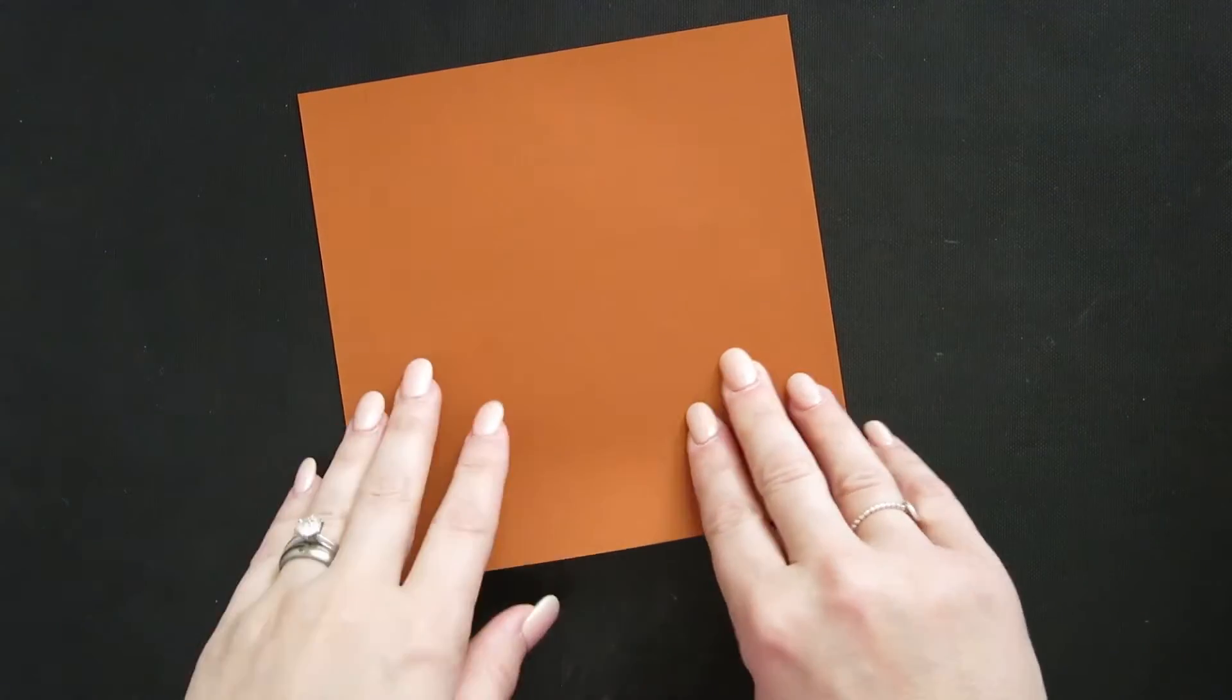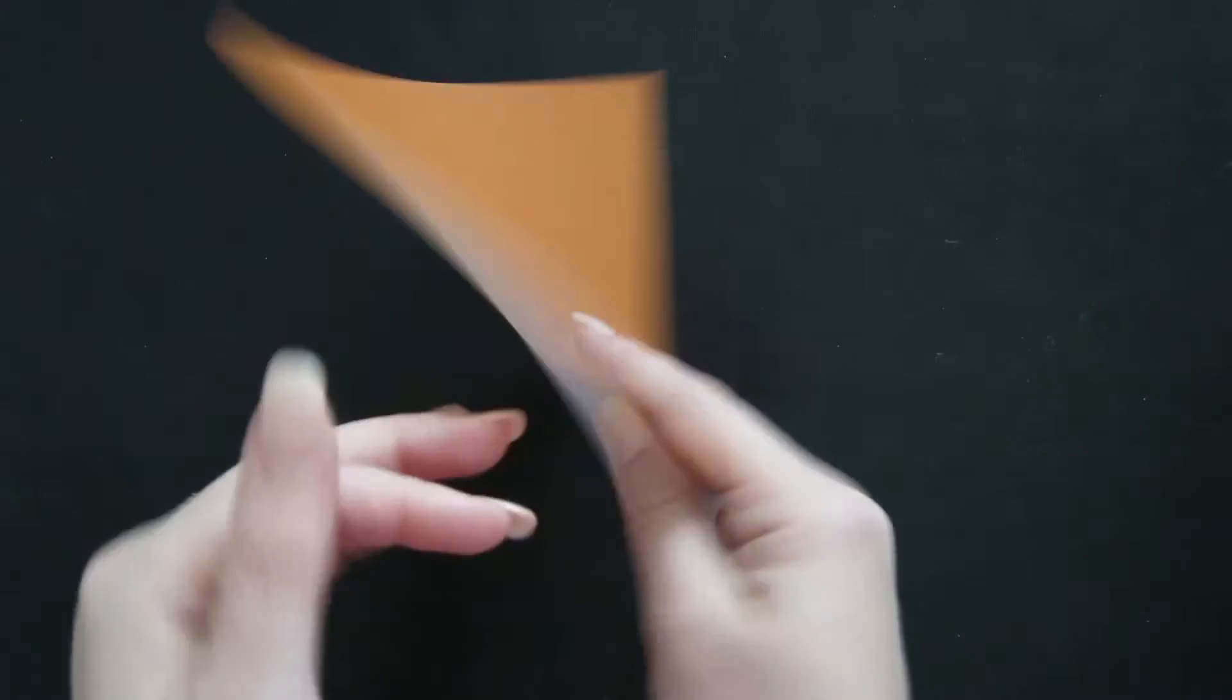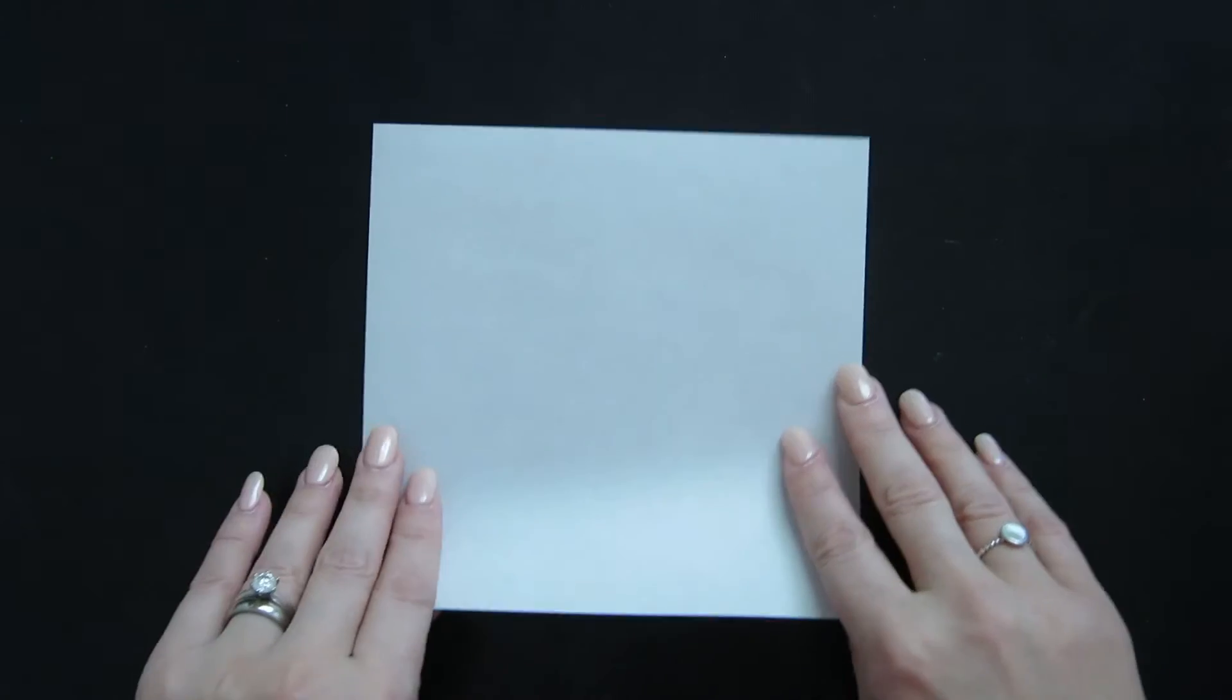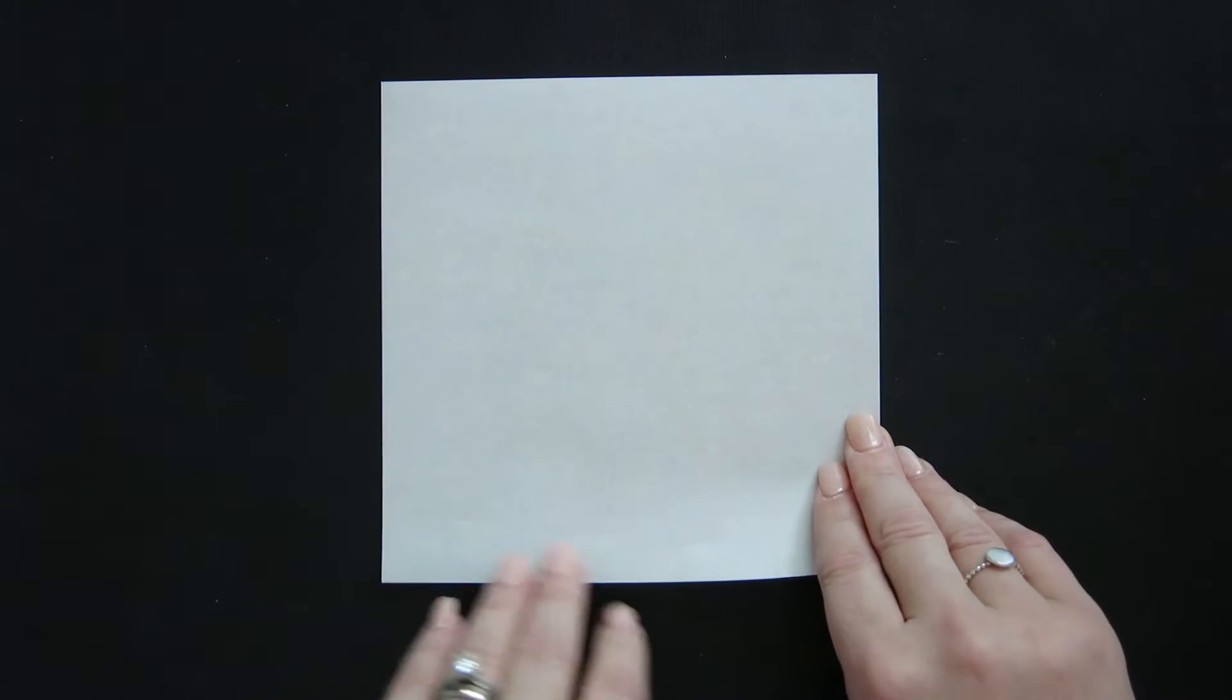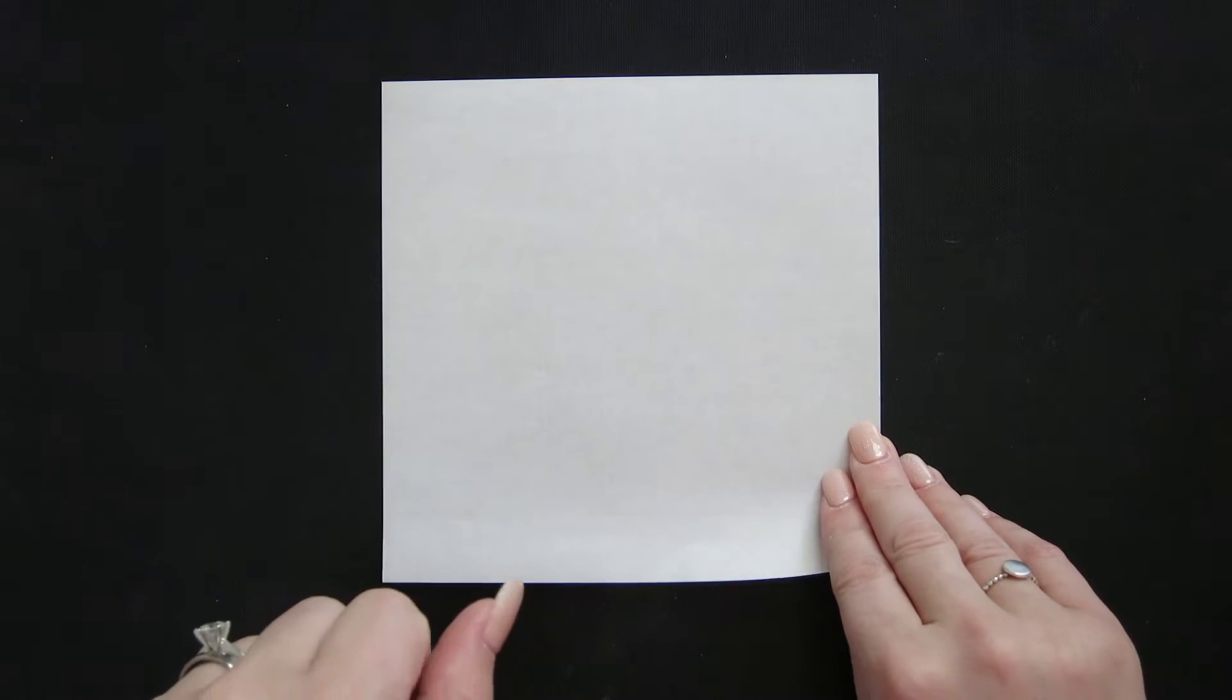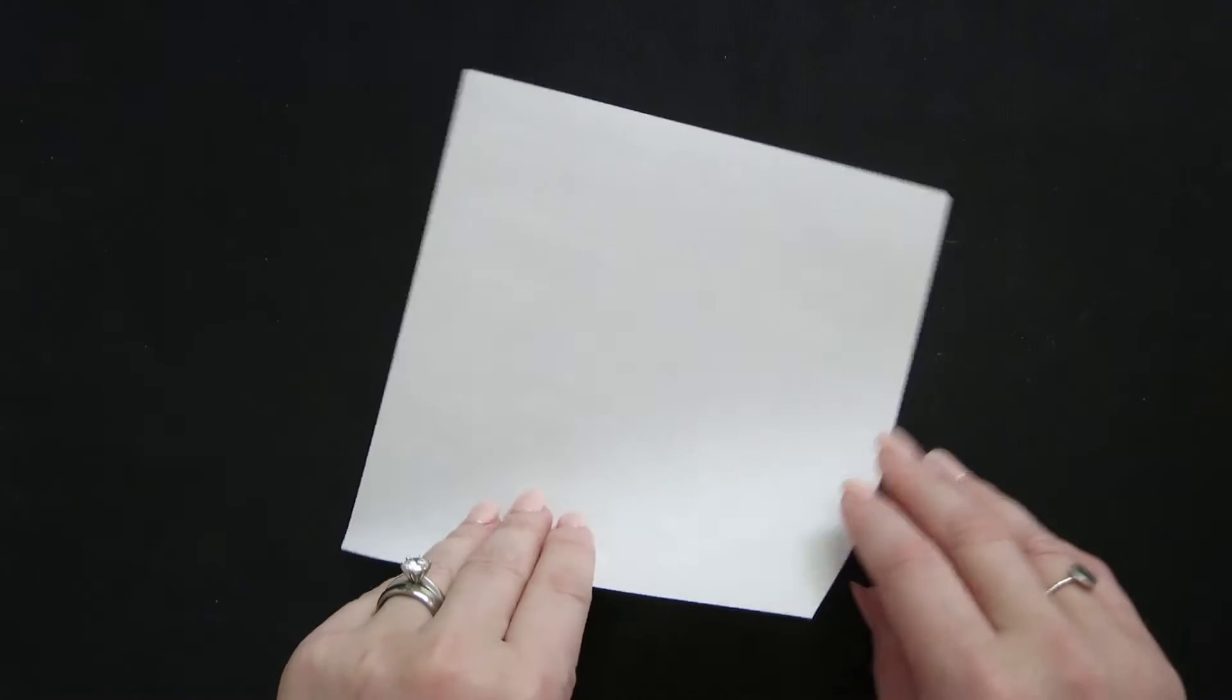Hi guys, welcome back to Origami Twist and yet another Daily December video. This particular one is an adorable little puppy dog and it is one of those ones that if you're kind of new to origami, this is a pretty straightforward one. So a great one to do with your kids on holidays.